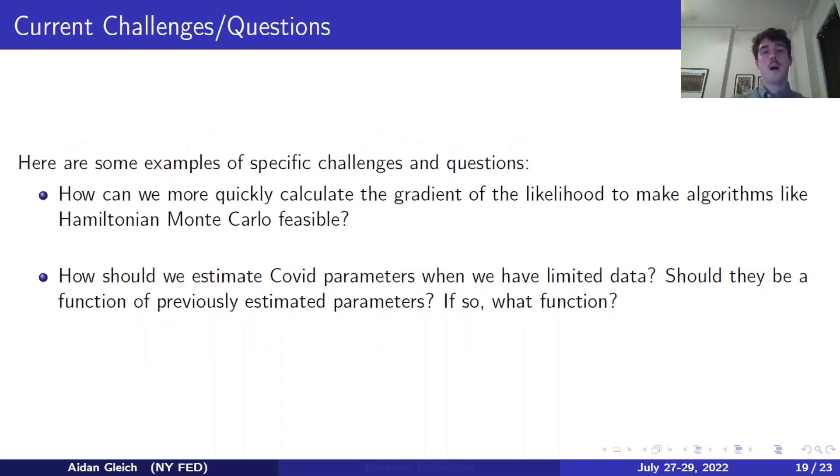Some current challenges and open questions that we're facing right now. We would like to be able to use estimation methods such as Hamiltonian Monte Carlo. But during the previous summer, when we attempted to implement HMC, we found that the gradient calculation of the likelihood function was so slow that it made HMC effectively infeasible. However, we want to be using the sort of state-of-the-art estimation algorithm such as the no-U-turn sampler, which requires that gradient calculation. We would like to find ways to speed that up so we have access to those algorithms.